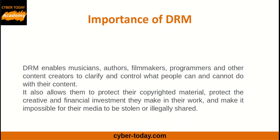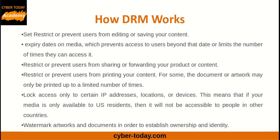How Digital Rights Management, DRM, works. Typically, DRM uses codes for prohibiting content copying or limiting the number of devices a product can be accessed from. Content creators can also use applications to restrict what users can do with their material, or encrypt digital media which can then only be accessed by anyone with the decryption key. They can restrict or prevent users from editing or saving content, and set expiry dates on media which prevents access beyond that date or limits the number of times they can access it.